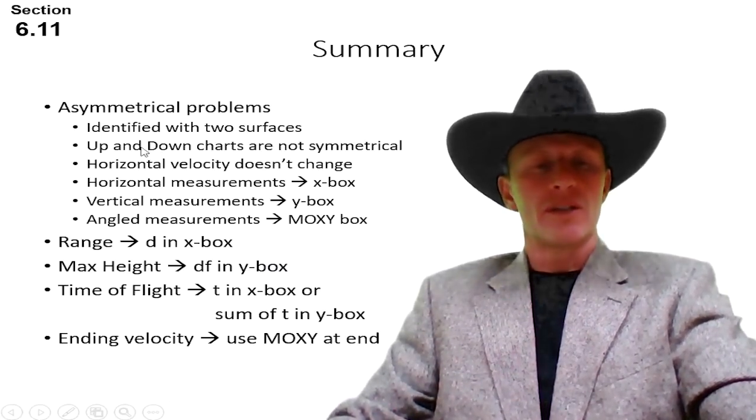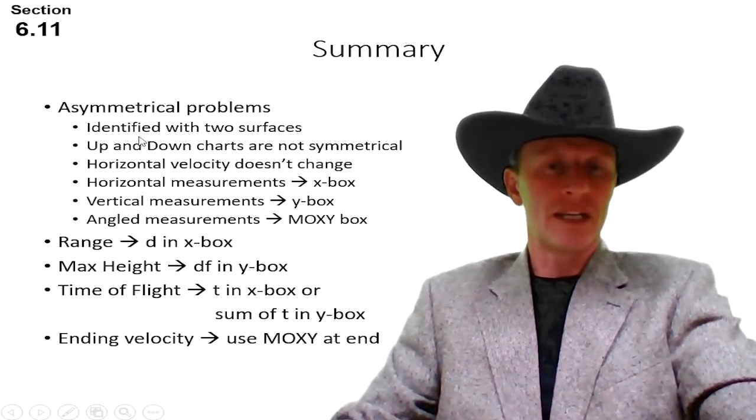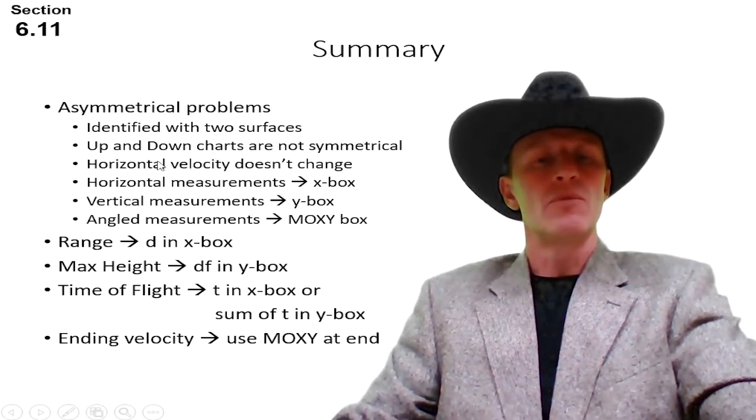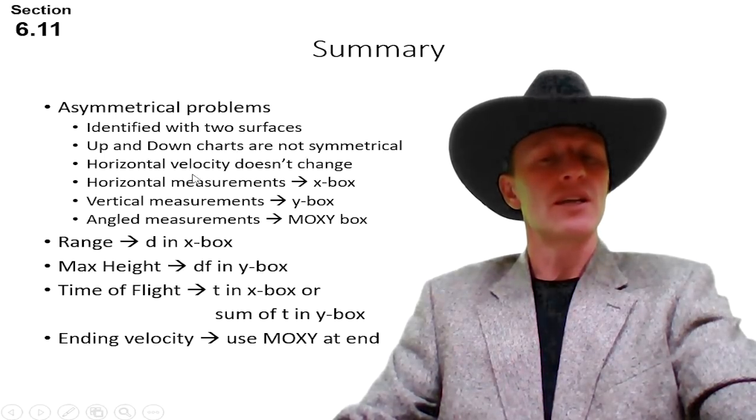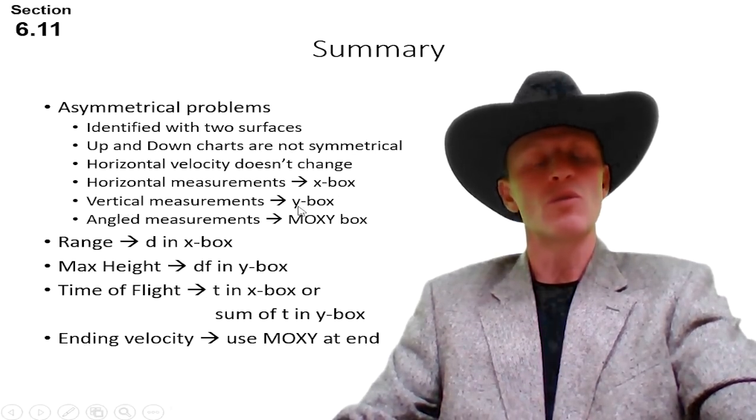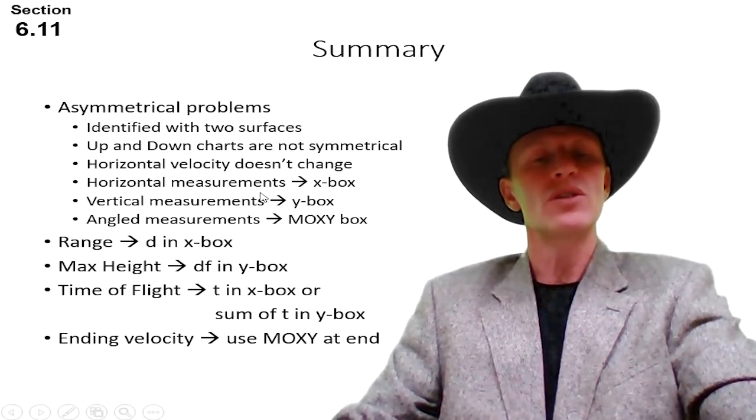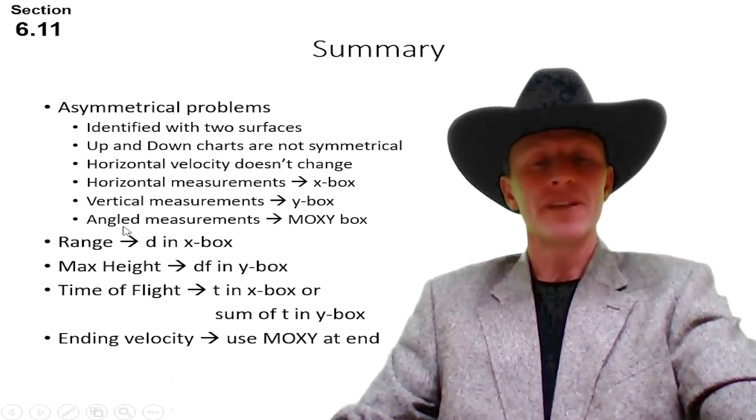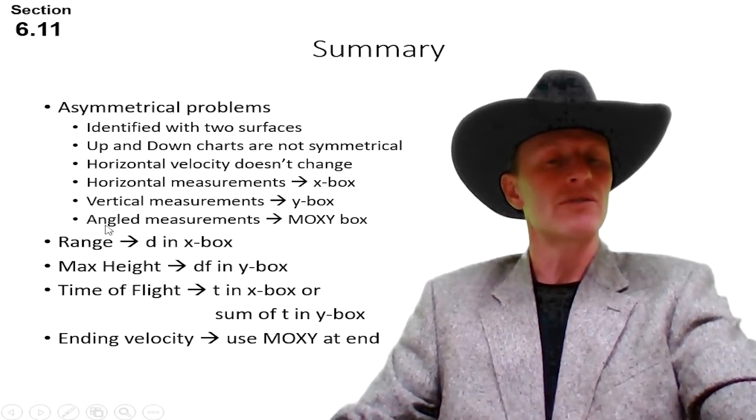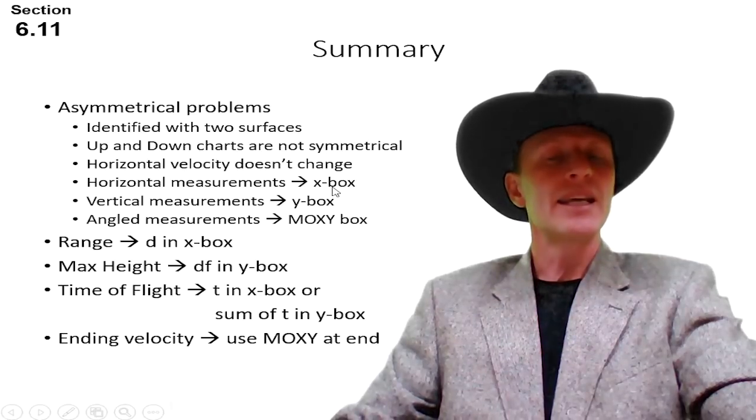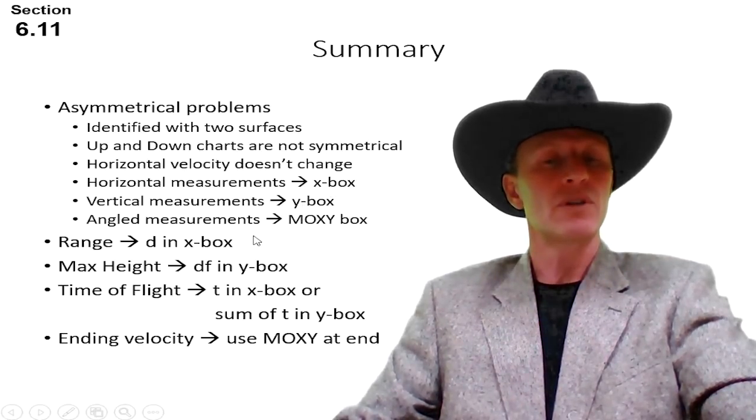Asymmetrical problems are identified with two surfaces. The up and down charts are not symmetrical. Remember that the horizontal velocity in this motion does not change, but the vertical velocity does. All horizontal measurements go in the x box. The vertical measurements go in the y box. If you can draw a line to represent the motion on a picture, that might help you identify whether it's a horizontal measurement or a vertical measurement. If it is by chance at an angle, the velocity needs to be put into the moxie box to get the x component and the y component, which goes into the x box and the y box.